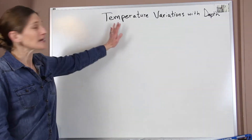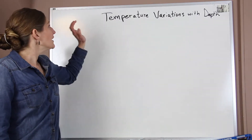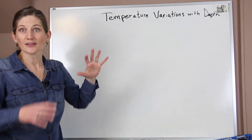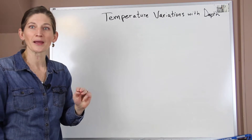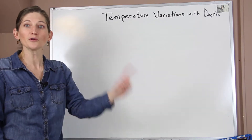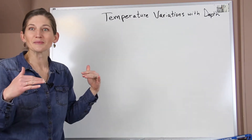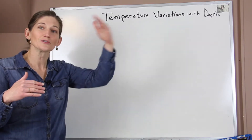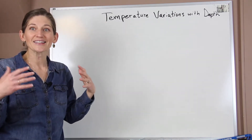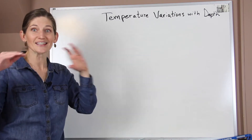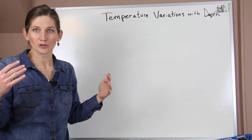We're going to be talking about temperature variations with depth in our oceans. The temperature variations that we see — these profiles — we see three different profiles, and they're all dependent on where you are located in the oceans: if you're in the low latitudes by the equator, if you're in our temperate zones, or if you're in our polar zones. That's because the temperature variations we see are all at the surface and are dependent upon those sea surface temperatures.